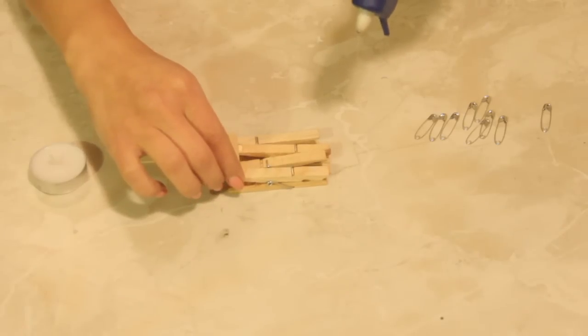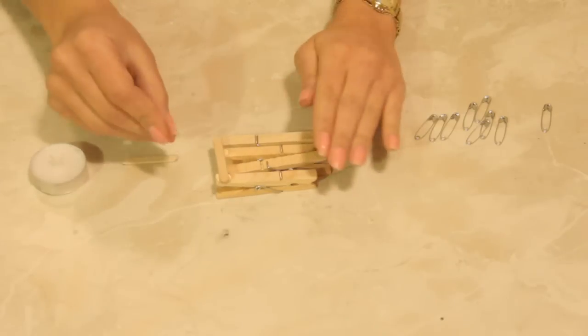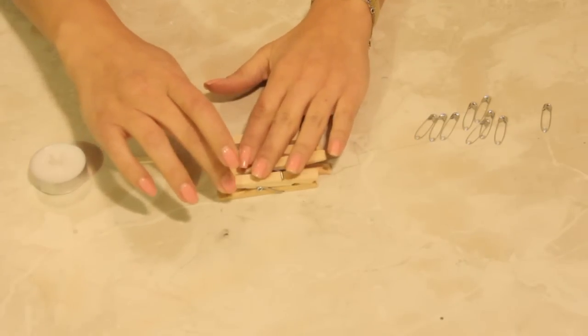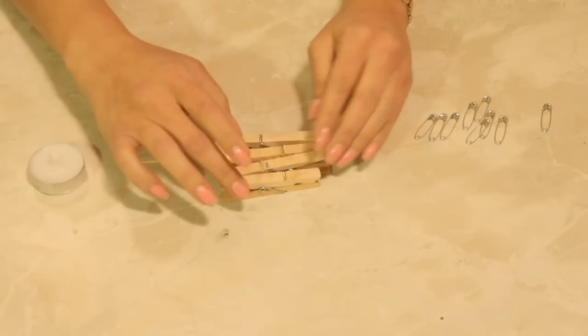Now we are going to brace this by adding just a couple of short pieces of popsicle stick that I broke into quarters.